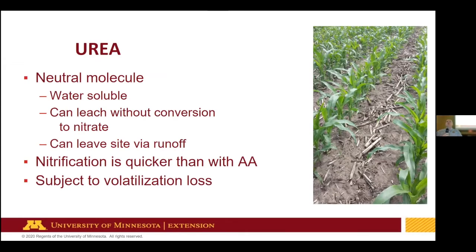Urea does nitrify quicker and it's subject to volatility. The volatility issue doesn't stop with cold soil temperatures. We do know that nitrification slows down once we hit about 50 degrees soil temperature. But with urea, since the hydrolysis process is affected by an enzyme, that process can happen even if the soils are cold.